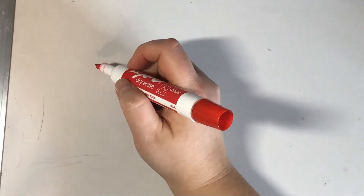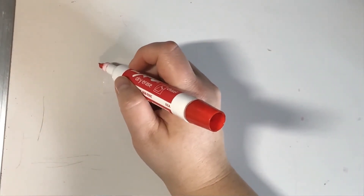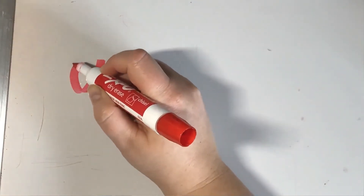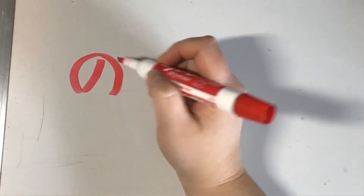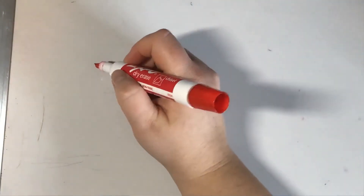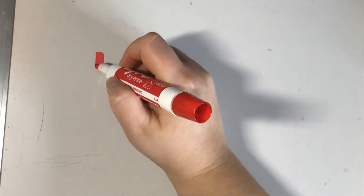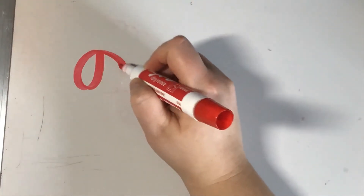Last in the N-row is no — my favorite one. It's basically one movement. Start in the top center, curl down to the left, bring it back up, and make about three-quarters of a circle. Top center, down, around, and end. That is no.